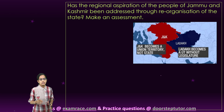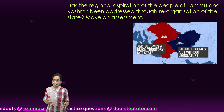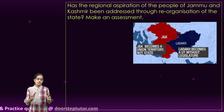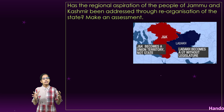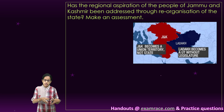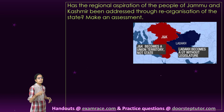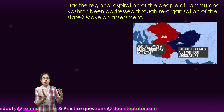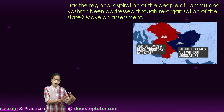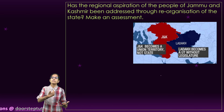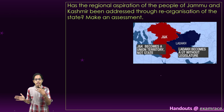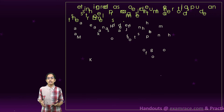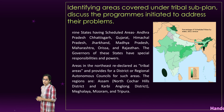The next question is: has the regional aspiration of the people of Jammu and Kashmir been addressed through the reorganization? The regional division brought a way to unite people on a common linguistic, regional, and religious basis. People mainly speaking Buddhist and Ladakhi languages were part of the Ladakh region, with separate regions of Jammu and Kashmir then separated. This is covered in our lecture specifically on Article 370.